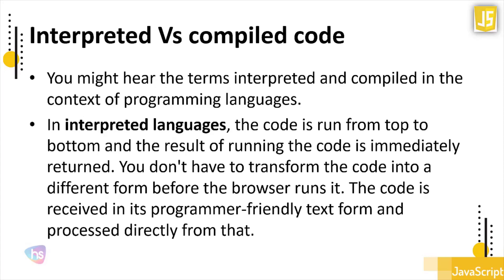Now let's look at interpreted versus compiled languages — how JavaScript code is going to be run. You might hear the terms interpreted and compiled in the context of programming languages when you are learning or beginning your journey with a programming language. In interpreted languages, the code runs from top to bottom and the result of running the code is returned immediately.